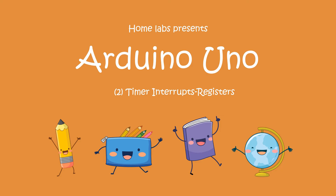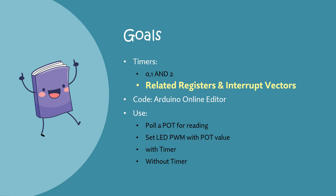Hello and welcome to another video on timer interrupts. In this video, we will be proceeding to talk about the registers. Our goal in this series of videos is to understand the Arduino timer interrupts. As I have said earlier, there are 3 timers: timer 0, 1 and 2. In this particular video, we will be talking about the related registers with these timers and their associated interrupt vectors.